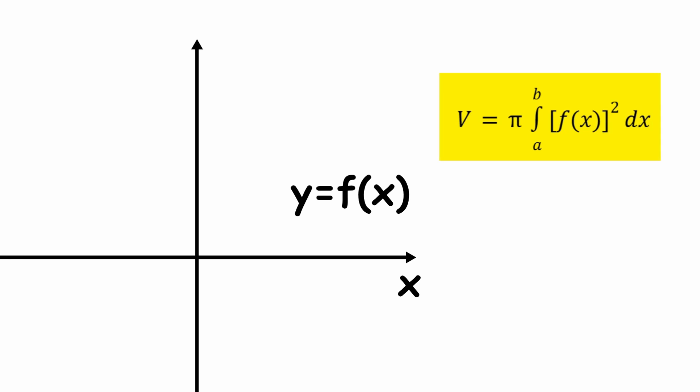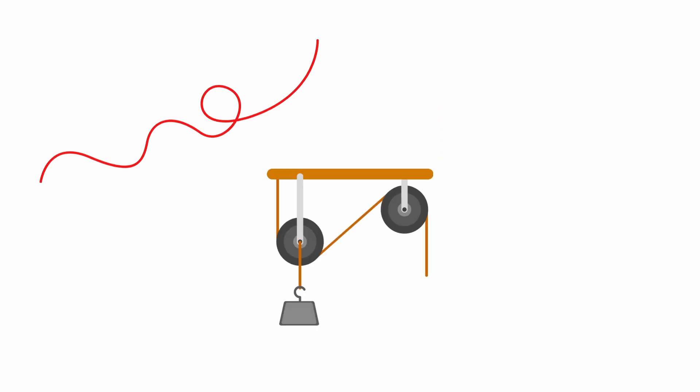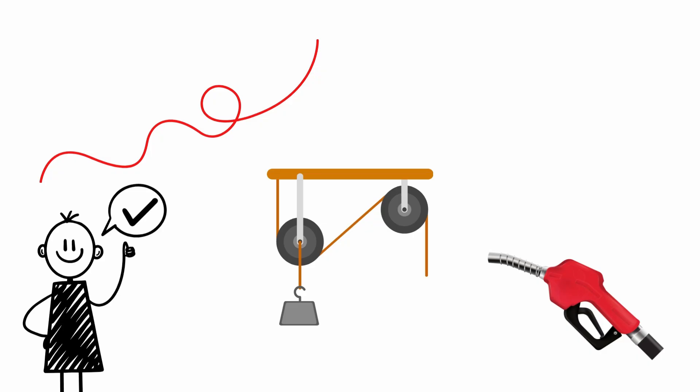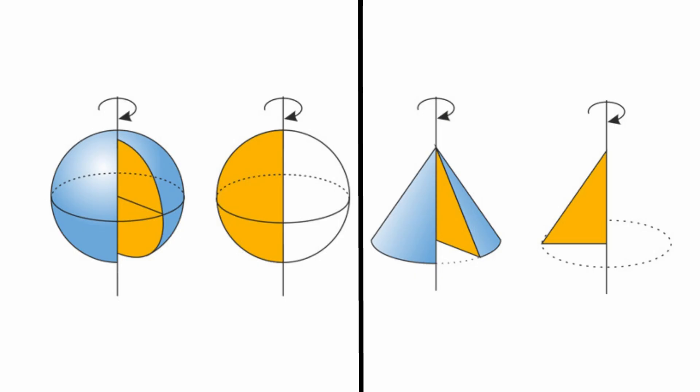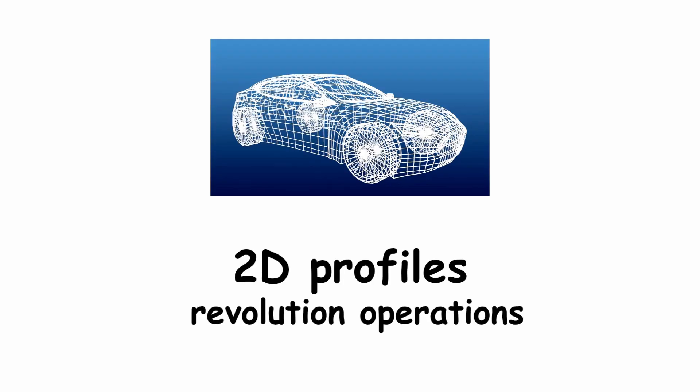This principle allows smooth shapes such as threads, pulleys, or nozzles to be modeled with great precision. The sphere, when rotating a semicircle, and the cone, when rotating an inclined line, are classic examples of solids of revolution. In 3D design, these shapes are represented using 2D profiles and revolution operations, reducing modeling complexity.